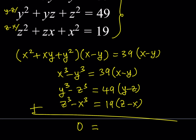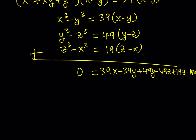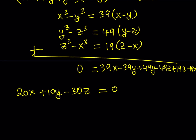Now we're going to add all of these up. Let me go ahead and expand: 39x minus 39y, plus 49y minus 49z, plus 19z minus 19x. Simplifying: 39x minus 19x gives 20x; negative 39y plus 49y gives 10y; and z gives negative 30z. This is equal to zero. We can divide both sides by 10 since they share a common factor.